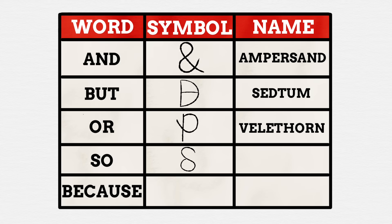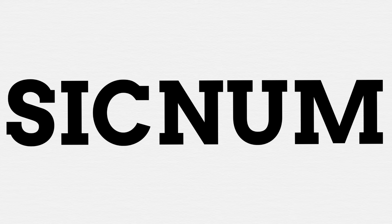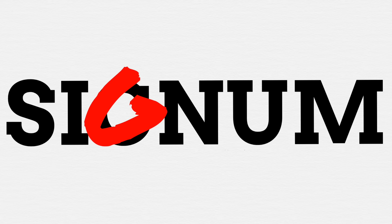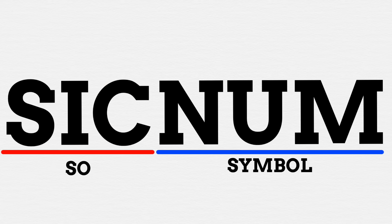This new symbol needs a name too, and the name I landed on is the 'sycnum.' The first part of this name comes from the Latin word for 'so,' which is 'sic,' but the latter part comes from the Latin word 'signum,' which means things like 'sign' and 'signal.' The word I coined, 'sycnum,' is the same as 'signum' minus changing the G to a C. This basically means 'the so sign' — a very fitting name as this is literally a sign that means 'so.'